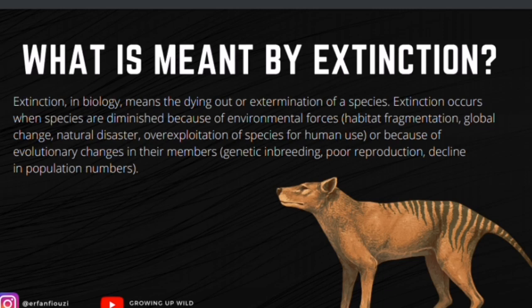Rates of extinction vary widely. For example, during the last 100,000 years of the Pleistocene epoch — about 2.6 million to 11,700 years ago — some 40 percent of large mammal species in Africa and more than 70 percent in North America, South America, and Australia went extinct. Ecologists estimate that the present-day extinction rate is 1,000 to 10,000 times the background extinction rate because of deforestation, habitat loss, over-hunting, pollution, climate change, and other human activities.